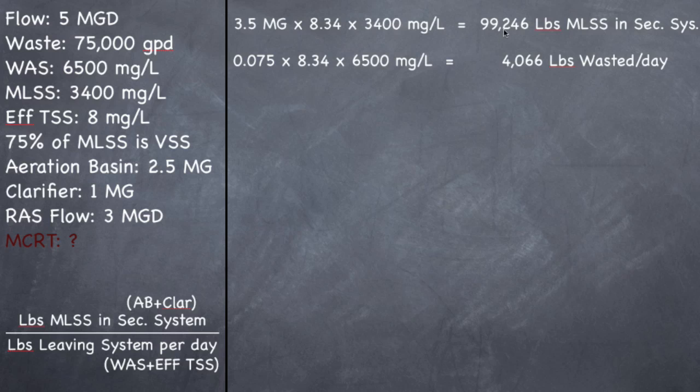So of the 99,246 pounds, you're getting rid of 4,000 a day. And remember, this is regenerating. Your bugs are dying or being wasted, and meanwhile cells are multiplying and dividing. So this number isn't just getting smaller and smaller as the day goes by when you waste and discharge. This number stays pretty fairly constant.